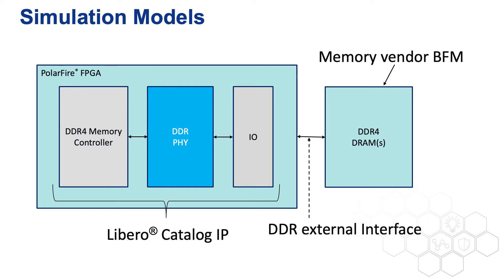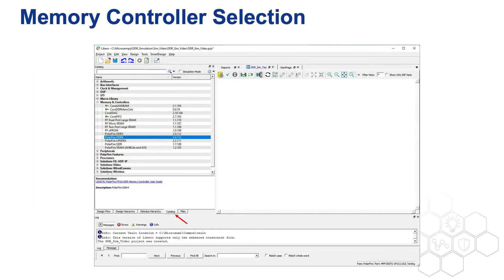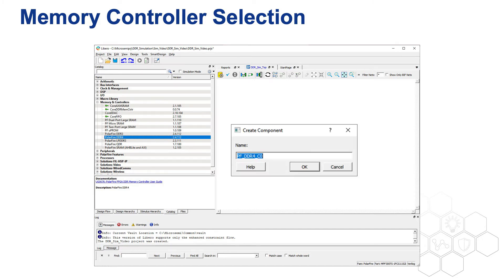Note that Libero can provide a template to help you write the simulation test bench. When selecting the memory controller for your design, select the catalog tab. Expand the memory controller section and double-click on PolarFire DDR4. A create component pop-up appears. Enter an instance name and click OK to proceed to configuring the memory controller.